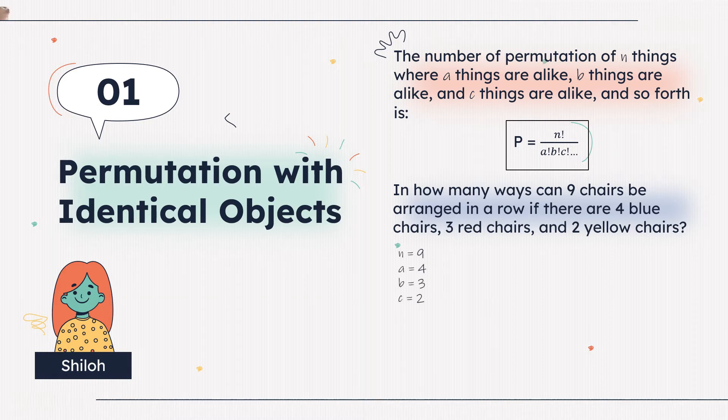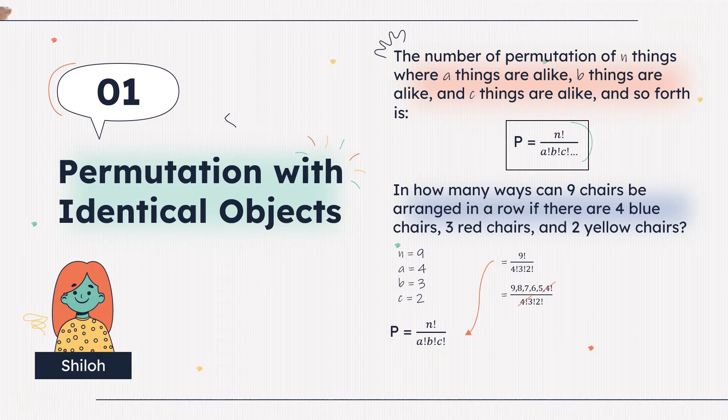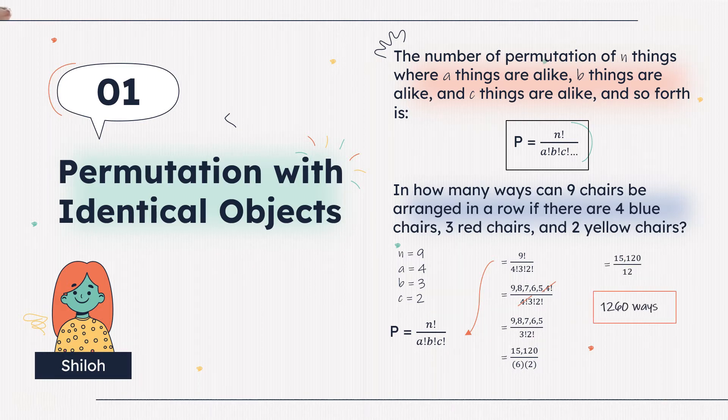So we have 9 chairs, 4 blue chairs, 3 red chairs, and 2 yellow chairs. Use the formula where n is 9, a is 4, b is 3, and c is 2. Count down from 9 until 4 factorial and cancel out both 4 factorial and solve. 15,120 divided by 12 is 1,260. So the answer is 1,260 ways.